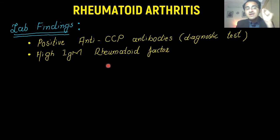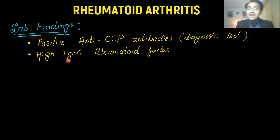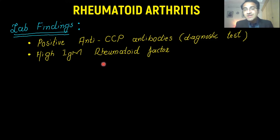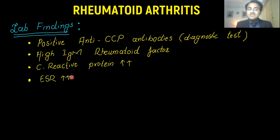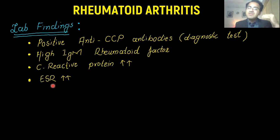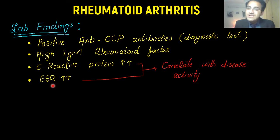Regarding the lab findings of rheumatoid arthritis: the most important test is anti-CCP antibodies — anti-citrullinated peptide is the most specific and diagnostic test for rheumatoid arthritis. High IgM rheumatoid factor is also checked, but rheumatoid factor is not a specific test for RA despite its name; it is a non-specific test. Anti-CCP is the diagnostic test. C-reactive protein and ESR will be elevated since RA is an inflammatory condition, and these correlate with disease activity.